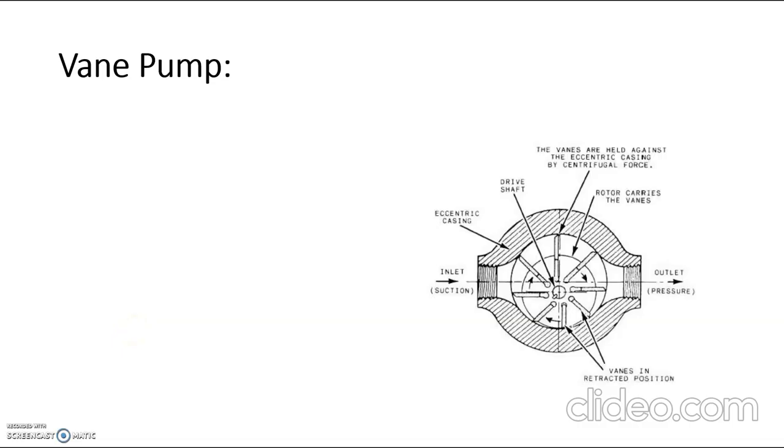The third rotary pump is vane pump. Vane pump consists of a casing, and it is an eccentric casing. Also it has a rotor. On the rotor, we can see there are slots in which we can see a number of sliding vanes.